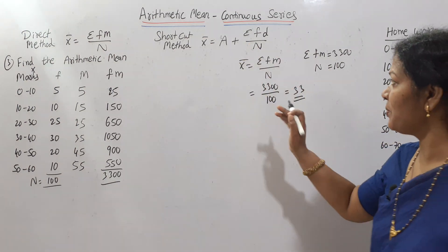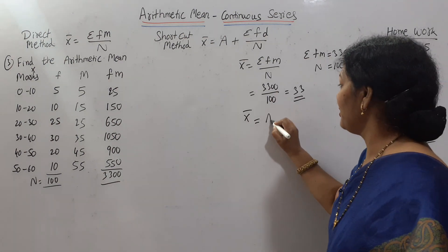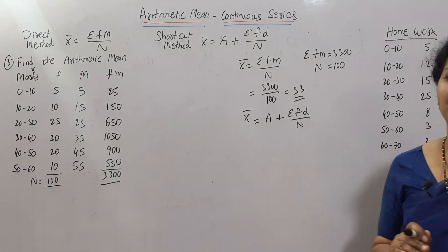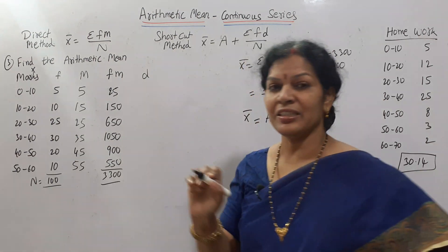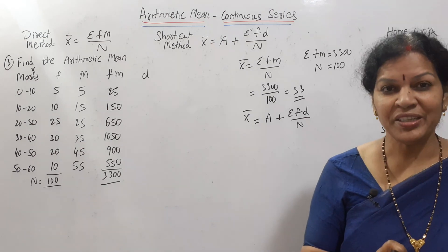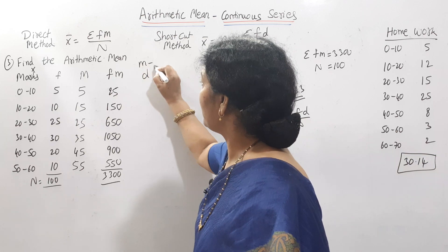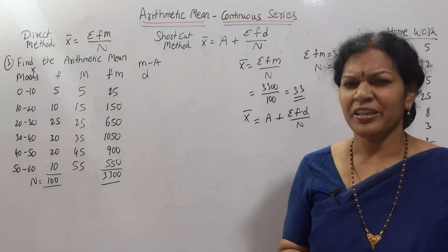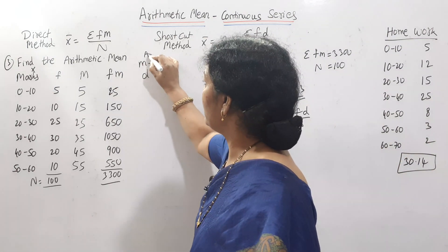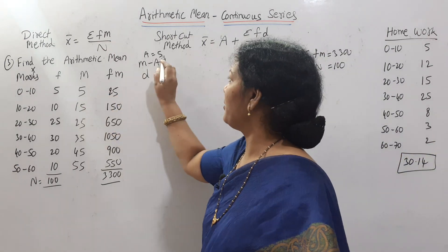Now we will see the shortcut method. Write the formula: A + σfd / n. We need to take deviations, just like in discrete series. Here we take deviations from mid-value: D = M − A, where A is an assumed value. I will take the minimum value — assume A = 5. So: 5 − 5 = 0, 15 − 5 = 10, 25 − 5 = 20, 35 − 5 = 30, 45 − 5 = 40, 55 − 5 = 50.